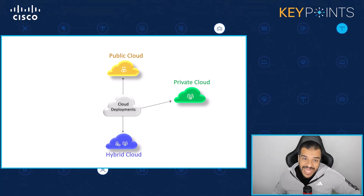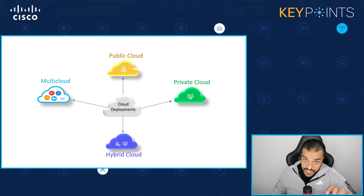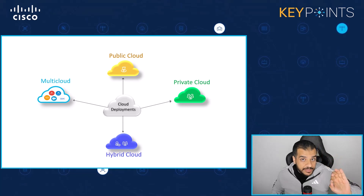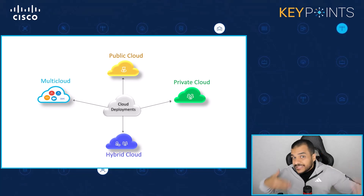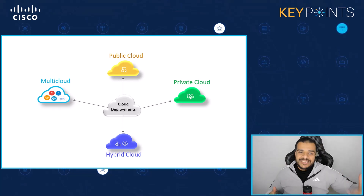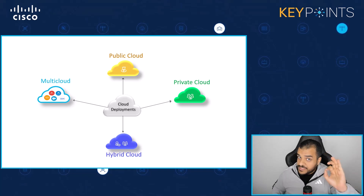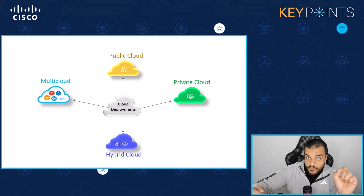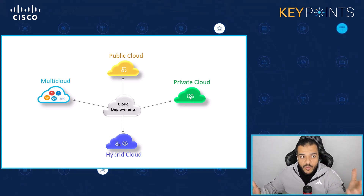We saved the best for last — multi-cloud. Multi-cloud is when you, as a customer, need to access several cloud providers — more than one public cloud provider — to access public cloud services from those multiple cloud providers. It's not a single public cloud provider you're connecting to; it's more than one public cloud provider giving you multiple services accessible via the internet. If it's a single provider offering specific applications, that's a public cloud. If it's more than one public cloud service provider offering multiple cloud offerings, that's called multi-cloud.